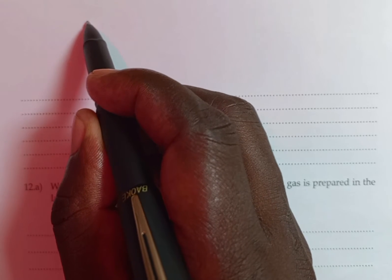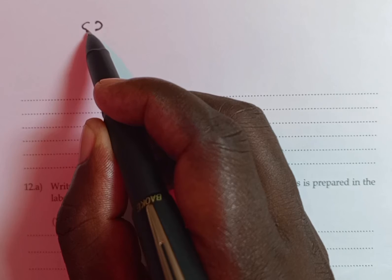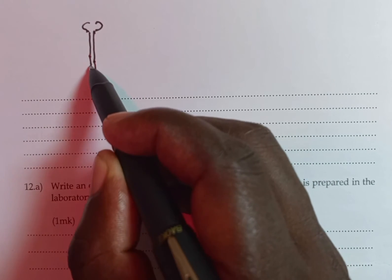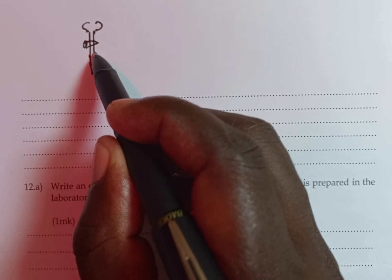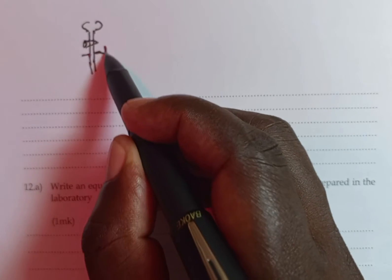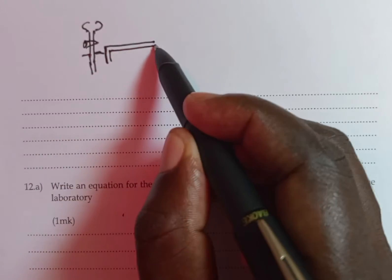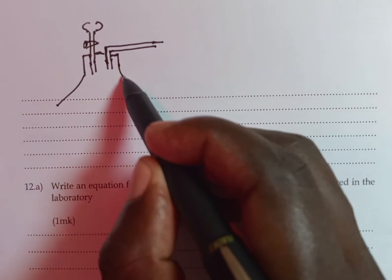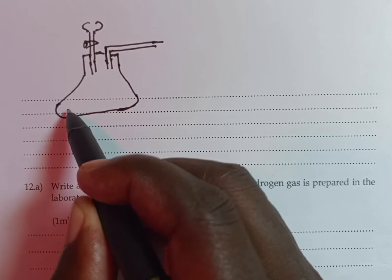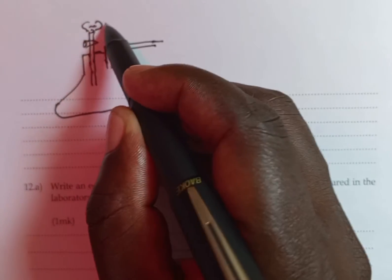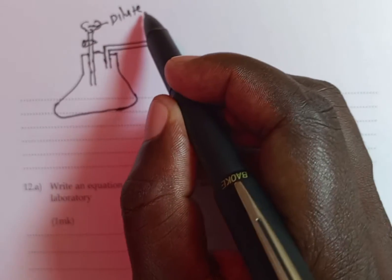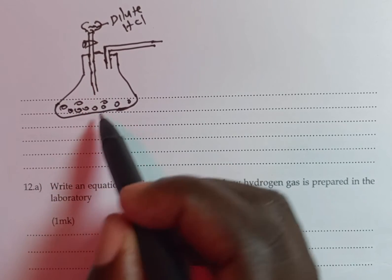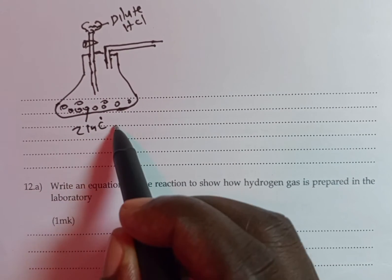The diagram for the laboratory preparation of hydrogen gas looks like this. This is the dropping funnel with a tap here. This is our delivery tube. This is our reaction chamber where we have the dilute hydrochloric acid. We have zinc metal here, zinc metal or zinc granules.